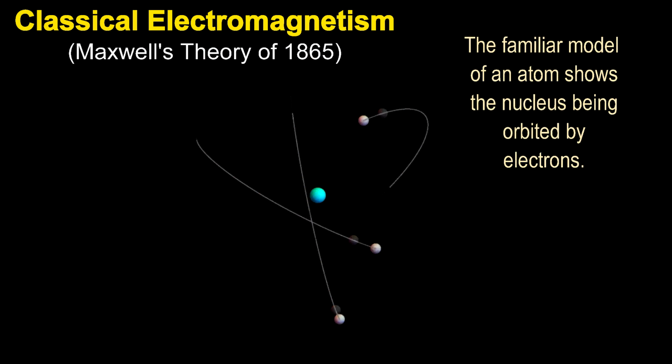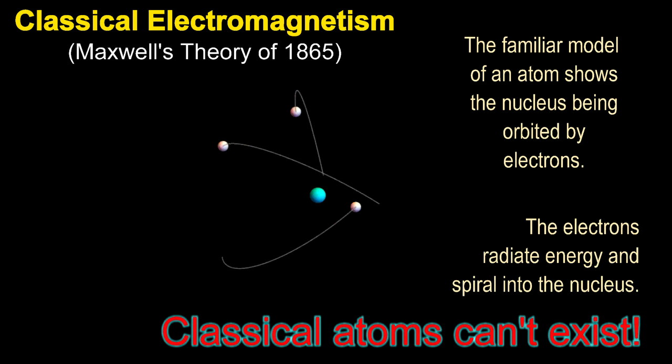Another problem is that Maxwell's theory treats the charge density as a classical field, instead of a quantum field. That has problems whenever the charges start demonstrating quantum effects. The big example is atoms. Maxwell's theory predicts that atoms will not exist. The electrons will just spiral into the nucleus.